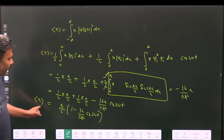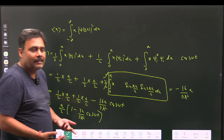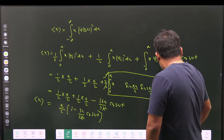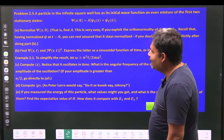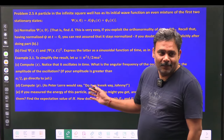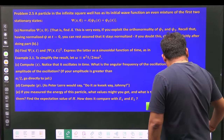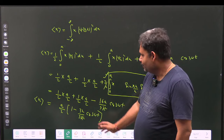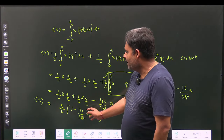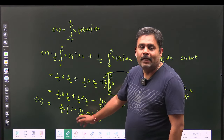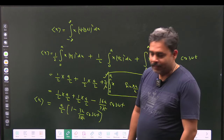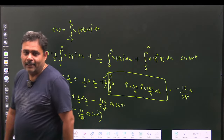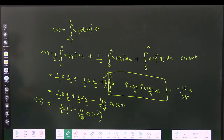We can verify that the amplitude 16a/(9π²) is less than a/2, as required physically. Since the particle is confined between 0 and a, the average position must oscillate within physical bounds. This amplitude is indeed less than a/2, confirming our result is physically consistent.